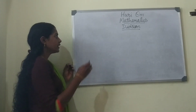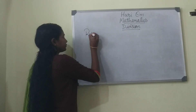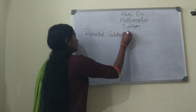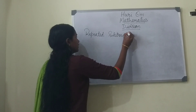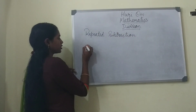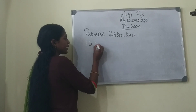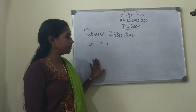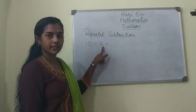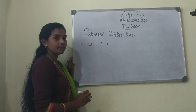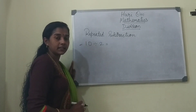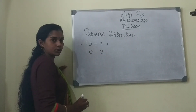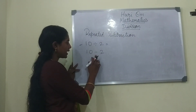So let us take an example of repeated subtraction. What is repeated subtraction children? If it is given 10 divided by 2, we shall solve this problem by repeated subtraction. So how to solve it in repeated subtraction? We have to take 10 minus 2.